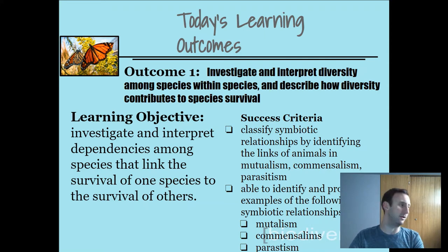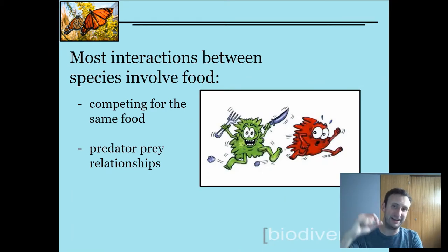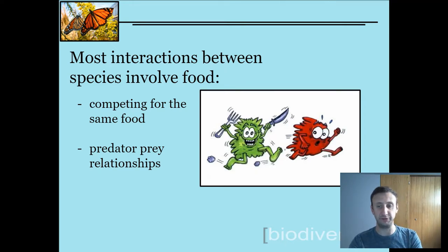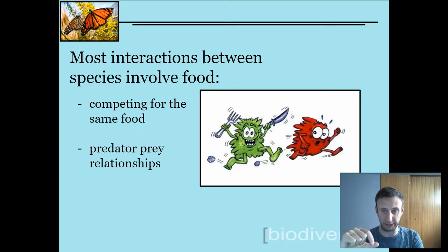You might be a little bit hazy on what these three mean, but we're going to go over it again today. First of all, a symbiotic relationship is not a predator-prey relationship. Most interactions between species involve food in some kind of way — whether it's competing for the same food, being eaten, or being the eater — but that's not what we're talking about when we talk about symbiosis.